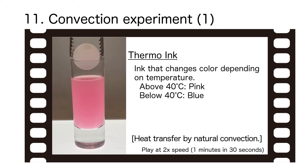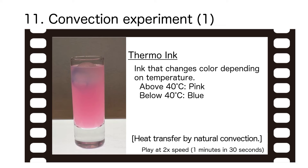Let us confirm the transfer of heat by convection with an experiment. The liquid in the glass is thermo-ink, a special ink that changes color depending on temperature. The white ball in the glass is called non-melting ice, which is water frozen in a plastic ball — the water does not melt out. The temperature around the non-melting ice is cooled and the color changes from pink to blue. Since the liquid with lower temperature has a heavier specific gravity, the blue liquid sinks to the bottom and accumulates there.